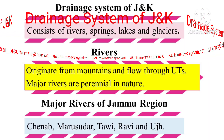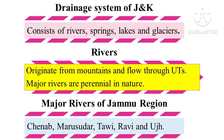The water resources of Jammu and Kashmir consist of rivers, springs, lakes, and glaciers. Rivers originate from mountains and flow through the UT. Major rivers are perennial in nature.